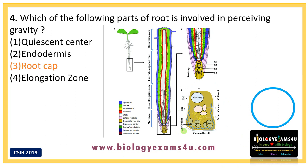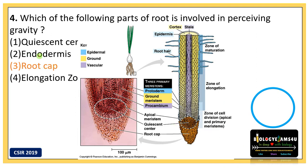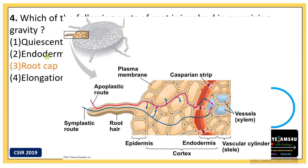The quiescent center is a region of inactive cells seen between the root cap and the meristematic region of the root. It is believed to be involved in replacing damaged initials of the root cap.